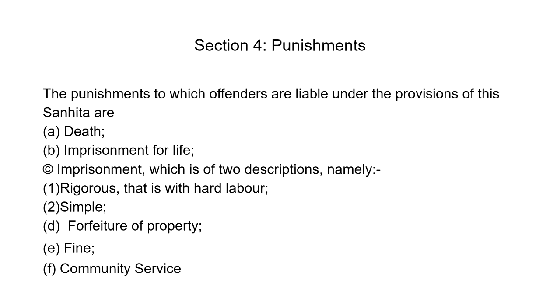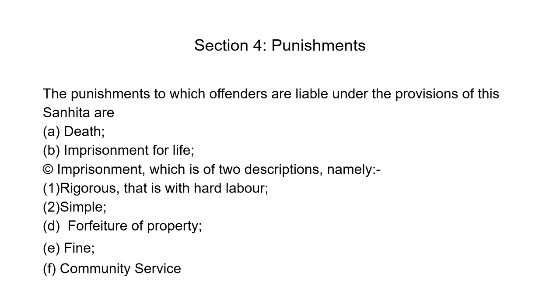Section 4 lays down the various kinds of punishments to which offenders are liable under the BNS. The highest is death penalty, followed by imprisonment for life — which means imprisonment for the remainder of a person's natural life. Then comes imprisonment, which is of two descriptions: rigorous imprisonment (with hard labour) and simple imprisonment. Other kinds of punishment include forfeiture of property, fine, and finally community service — a new kind of punishment introduced by the Bharatiya Nyaya Sahita in 2023.